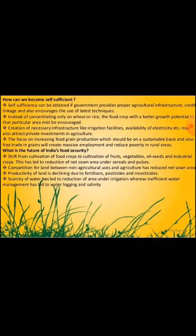What is the future of India's food security? There is a shift from cultivation of food crops to cultivation of fruits, vegetables, oilseeds and industrial crops, which has led to a reduction of net sown area under cereals and pulses. Competition for land between non-agricultural uses and agriculture has reduced net sown area. Productivity of land is declining due to fertilizers, pesticides and insecticides. Scarcity of water has led to reduction of area under irrigation, whereas inefficient water management has led to waterlogging and salinity.